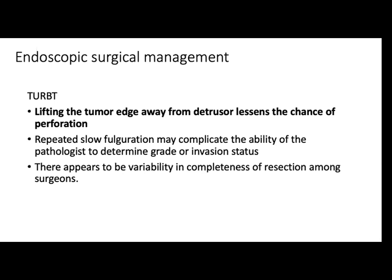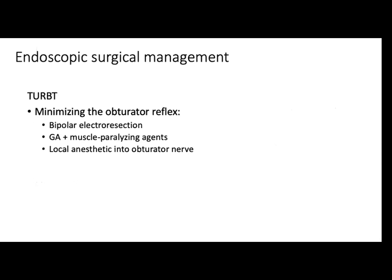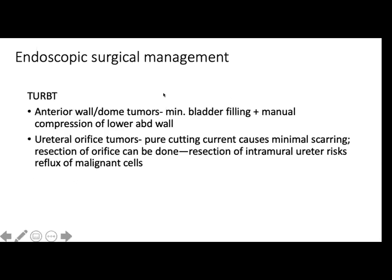There is also the obturator reflex, which can be minimized when using bipolar electro-resection with general anesthesia and muscle relaxants. Regional anesthesia to the obturator nerve is also described in the textbook. For anterior wall and dome tumors, TURBT should use minimal bladder filling with manual compression of the lower abdomen. The ureteral orifice with pure cutting causes minimal scarring. However, resection of the intramural ureter risks reflux of malignant cells. For small tumors, a cold cup biopsy may be used especially in elderly women with thin-walled bladders.